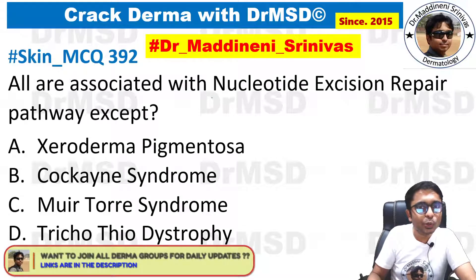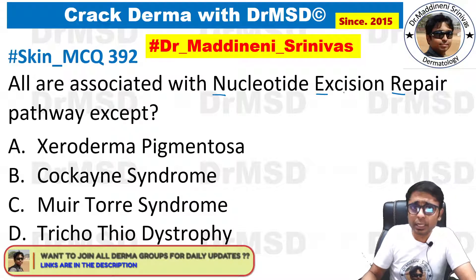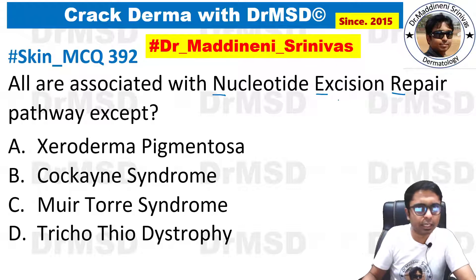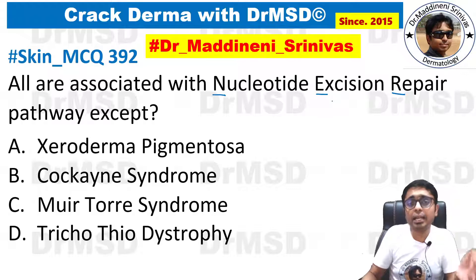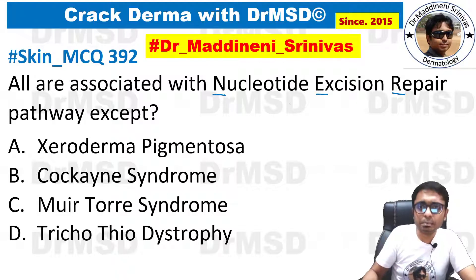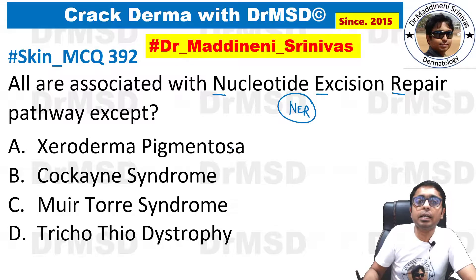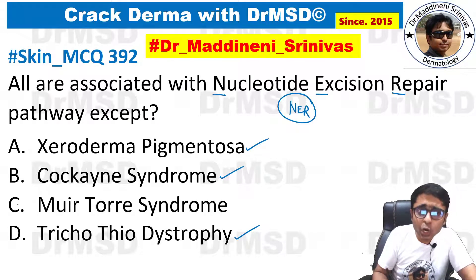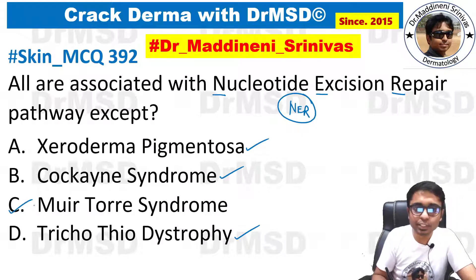All of the following are associated with nucleotide excision repair pathway, except. During the replication of DNA, there will be certain defects. To rectify them, there are certain mechanisms and enzymes. If there is a defect in the nucleotide excision repair, there can be manifestation in the form of xeroderma pigmentosum, Cockayne syndrome, and trichothiodystrophy. Option C, Muir-Torre syndrome, is not associated with nucleotide excision repair — that is the reason why C is the answer for this question.